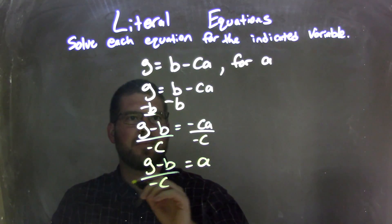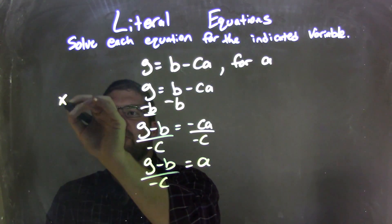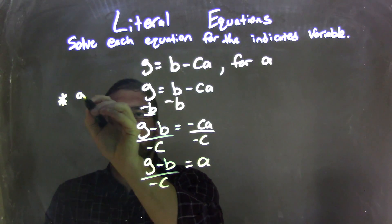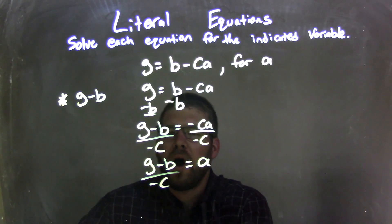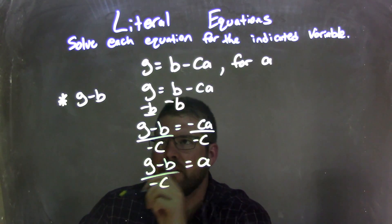Now I'm going to show you a little trick here. What is G minus B? I think I can distribute that negative up top.